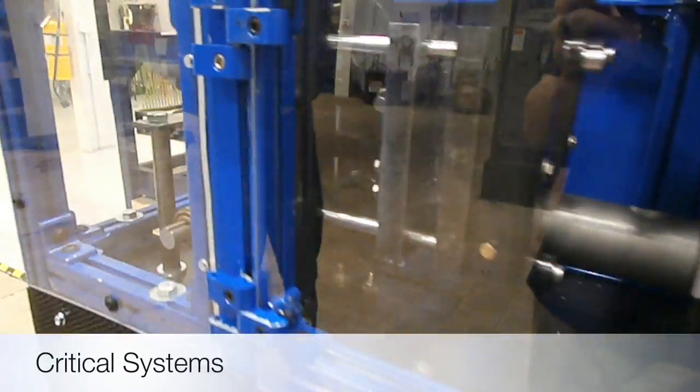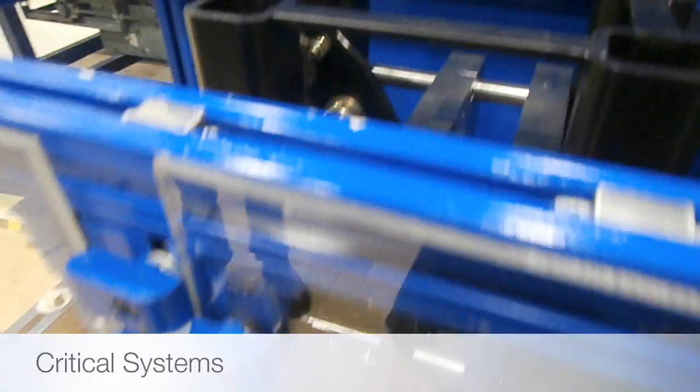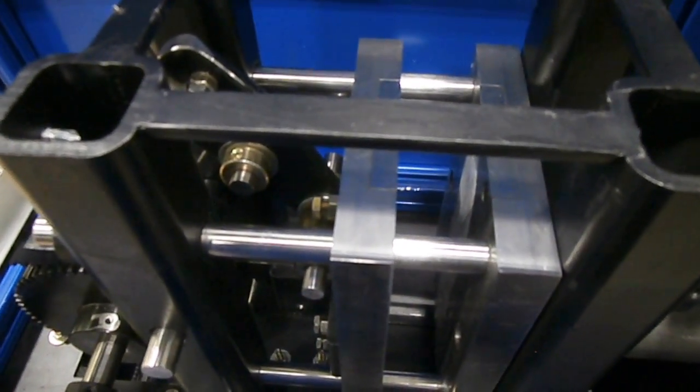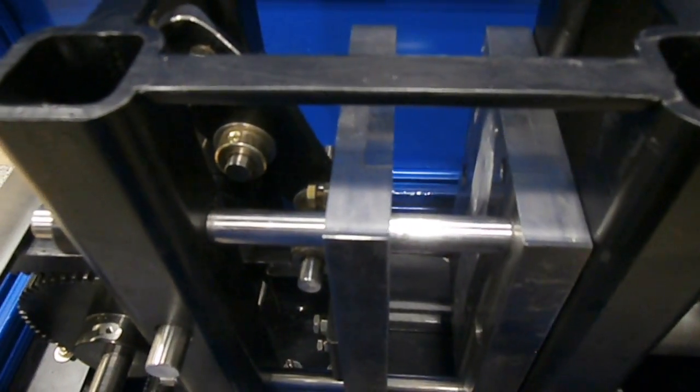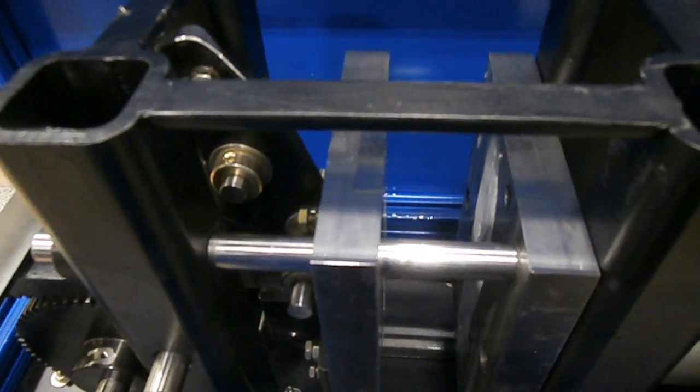Now for a close-up of our die and locking system. Here we have a top view. As you can see, there's the die and the locking system bars right there. As the machine opens up, the locking system moves with it.